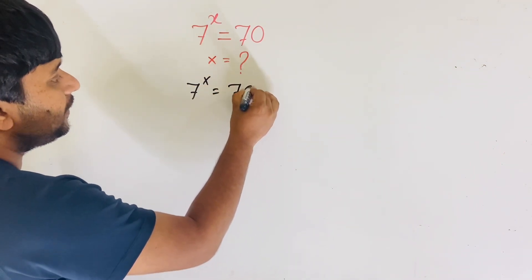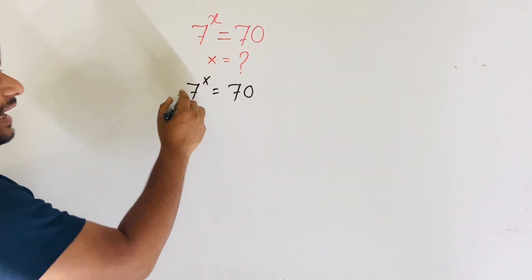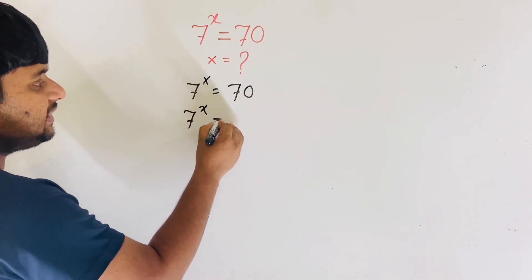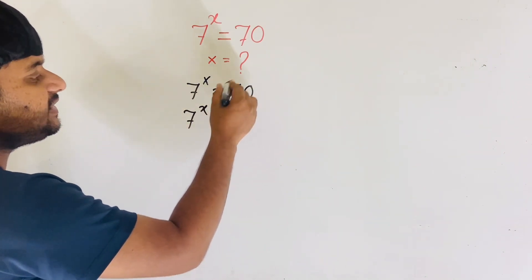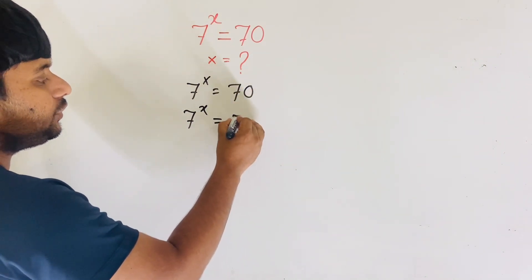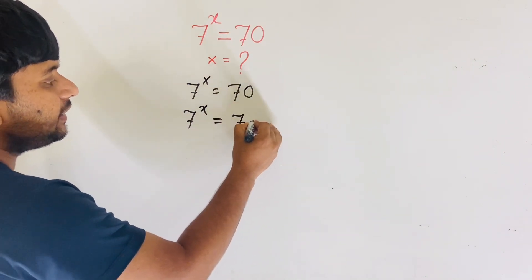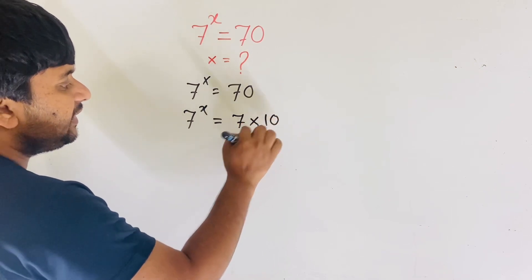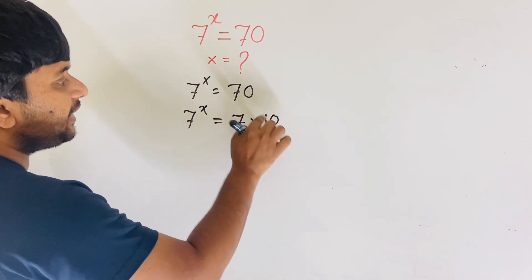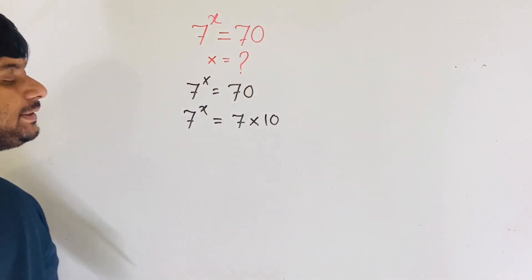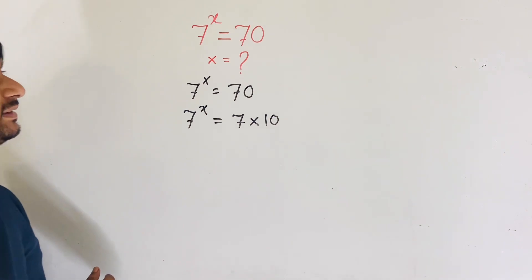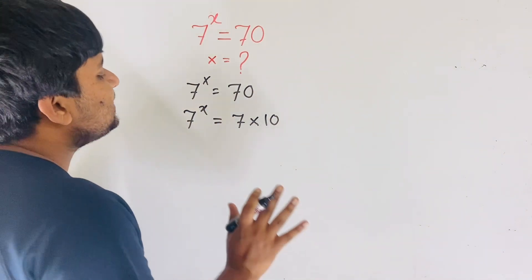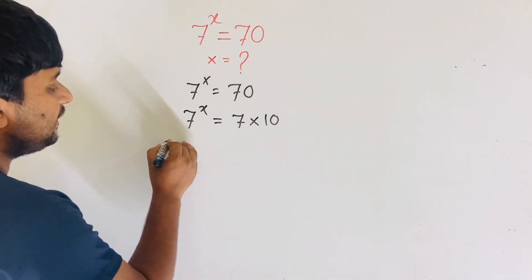So our equation is 7 to the power x equals 70. We can rewrite 70 as 7 times 10, since 7 times 10 equals 70.